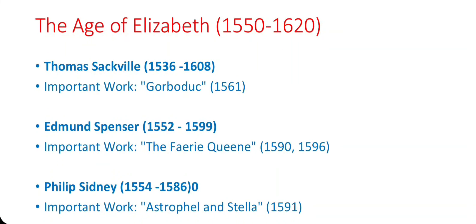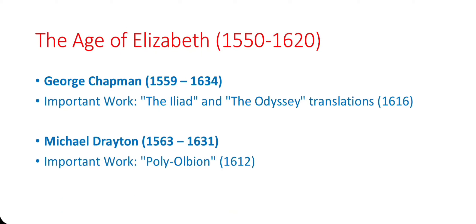Now let's see the important poets and writers of this age. First is Thomas Sackville — important work: Gorboduc. Edmund Spenser — The Faerie Queene. Philip Sidney — Astrophil and Stella. George Chapman — translation of The Iliad and The Odyssey. Michael Drayton — Poly-Olbion.